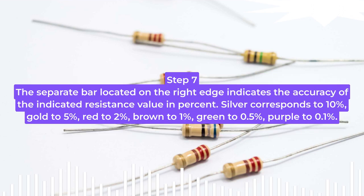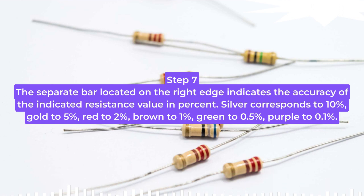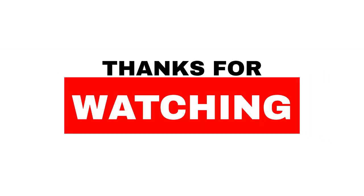Step 7: The separate bar located on the right edge indicates the accuracy of the resistance value in percent. Silver corresponds to 10%, gold to 5%, red to 2%, brown to 1%, green to 0.5%, purple to 0.1%. Thanks for watching.